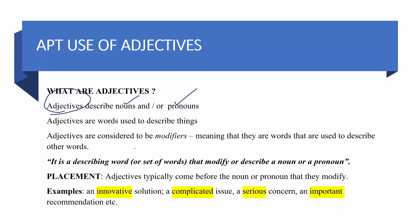We also call adjectives modifiers because they help to modify a noun or a pronoun. For example, 'an innovative solution' — here solution is a noun, and innovative is the adjective. 'A complicated issue' — issue is a noun, complicated is the adjective. Similarly, 'a serious concern' — serious is an adjective — and 'an important recommendation' — important is an adjective.